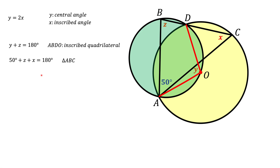Since all we care about is X, here's what we do: replace Y in the second equation with 2X. Then subtract the third equation from the resulting fourth equation. If we do that, we find that X equals 50 degrees. And that's the final answer.